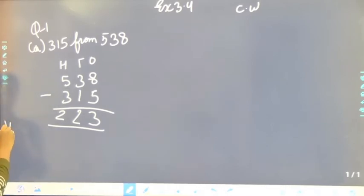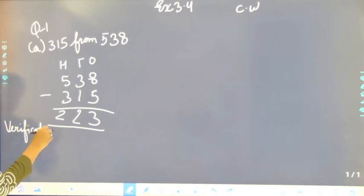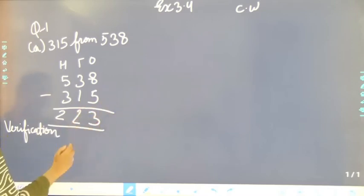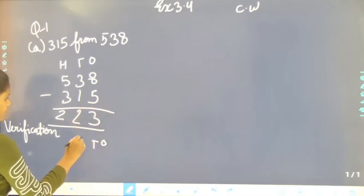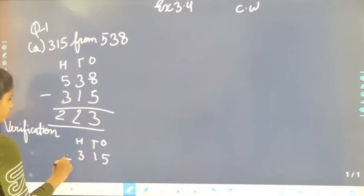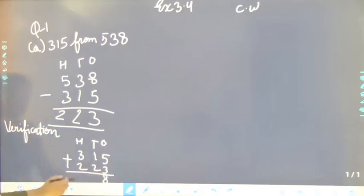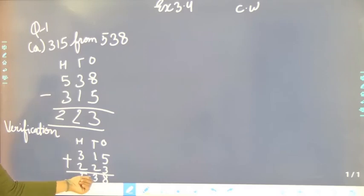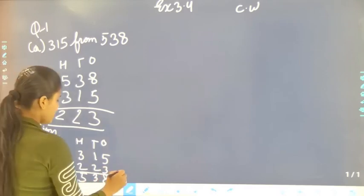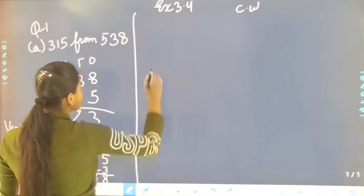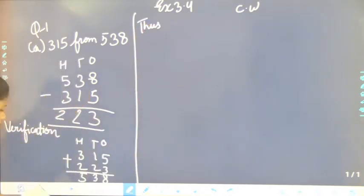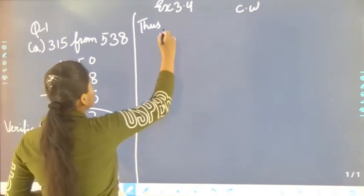Now we have to do verification. For verification we add both numbers — ones, tens, hundreds: 315 plus 223. 5 plus 3 is 8, 1 plus 2 is 3, and 3 plus 2 is 5. So the answer is 538. Thus, the subtraction is correct.